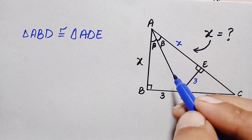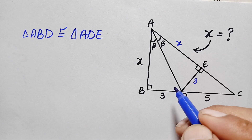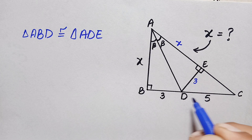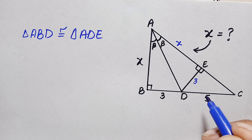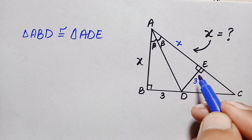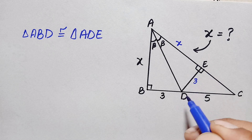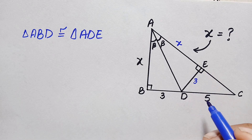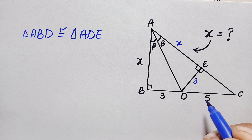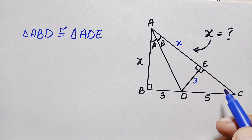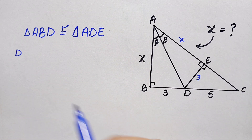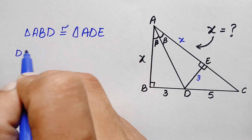Now our target is to find this one side of the smaller triangle CDE. This angle at E is a right angle, so in this right angle triangle CDE we will apply the Pythagorean theorem. By the Pythagorean theorem, hypotenuse squared is equal to base squared plus perpendicular squared.